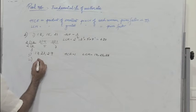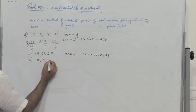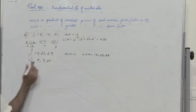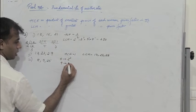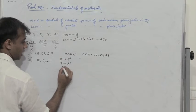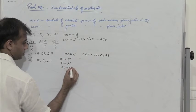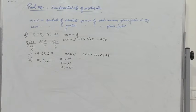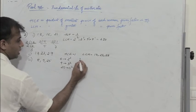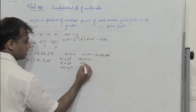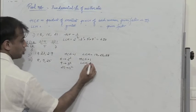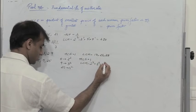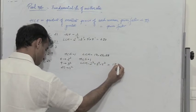The next problem: 8, 9, and 25. These can be written as 8 = 2³, 9 = 3², and 25 = 5². There is no prime number common to all three, so HCF = 1. For LCM, the greatest power of each prime factor gives 2³ × 3² × 5² = 1800.